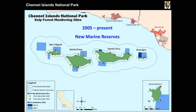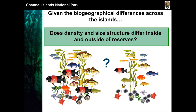Now I'm going to talk about the marine reserves 2005 to present. I'm looking at these comparisons: a few sites in, three sites out, across these four marine protected areas. We can ask questions like whether size and density change inside versus outside the reserve — essentially, are they working? We remove fishing effort and look at the fish species.